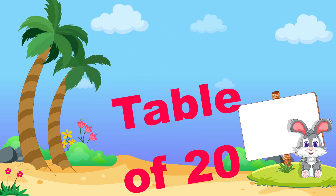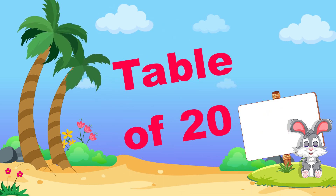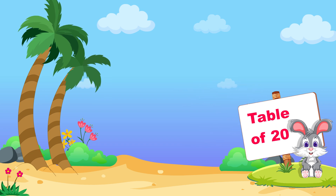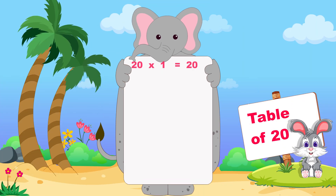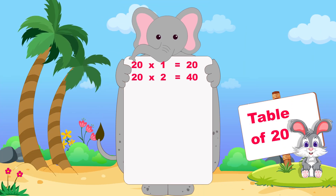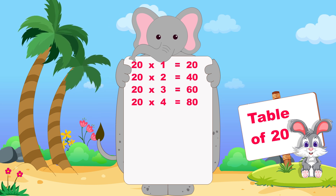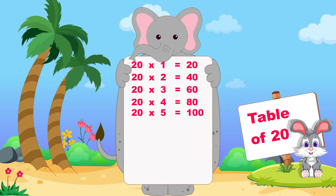Let's learn now table of twenty. Twenty ones are twenty, twenty twos are forty, twenty threes are sixty, twenty fours are eighty, twenty fives are one hundred.